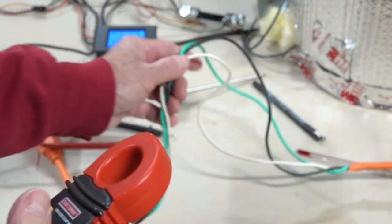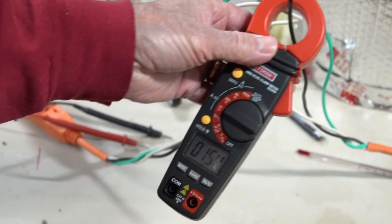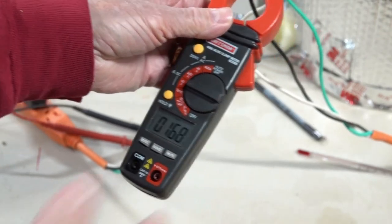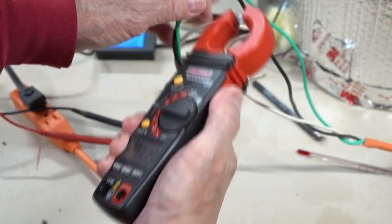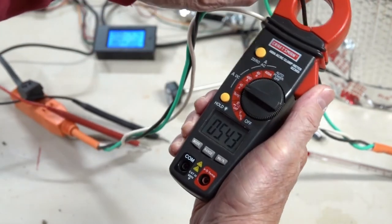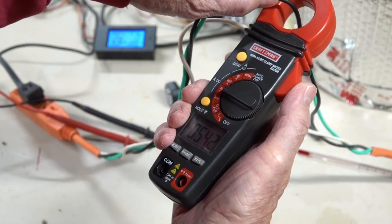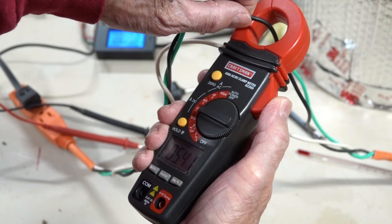So another thing you should never do is don't clamp on like that. That's not going to work. It gives you a bogus reading. And it really doesn't matter, if you look in here, where in this opening the current carrying conductor goes. You get basically the same reading.